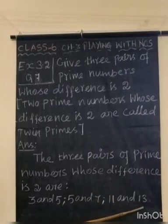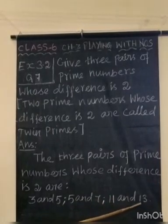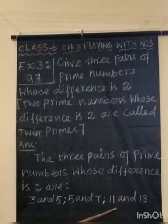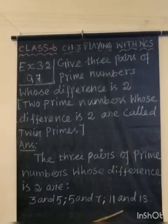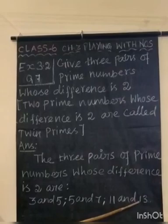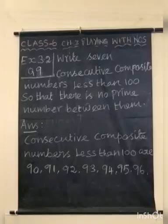Then 11 and 13. 13 minus 11 is 2, so the difference is 2. 11 and 13 are prime numbers.